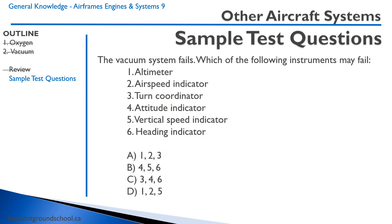A more serious question: the vacuum system fails. Which of the following instruments may fail? One, the altimeter. Two, airspeed indicator. Three, turn coordinator. Four, attitude indicator. Five, vertical speed indicator. Six, heading indicator.